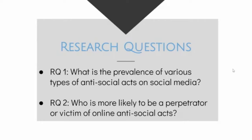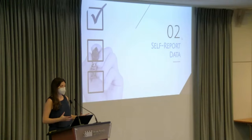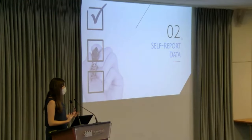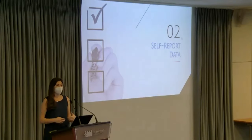We can see things like deep fakes and revenge porn — things that have emerged more recently in the online space, though they certainly have a longer history. So what is the prevalence of these various types of antisocial behavior? The second question is: who is more likely to be a perpetrator or a victim of antisocial acts? This gets at socio-demographic characteristics and social media use habits. This is part of our ongoing research, and the goal of this presentation is really to give a primer on how you could be using self-report data in your own research.